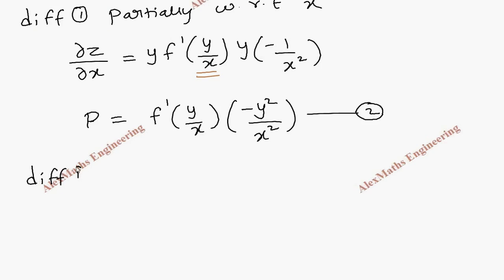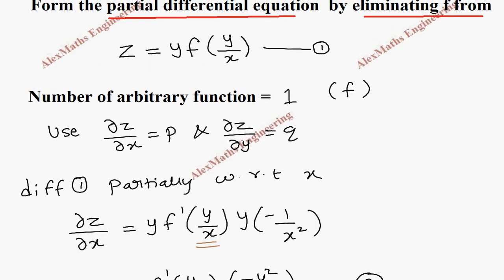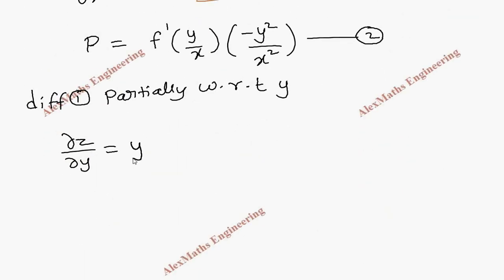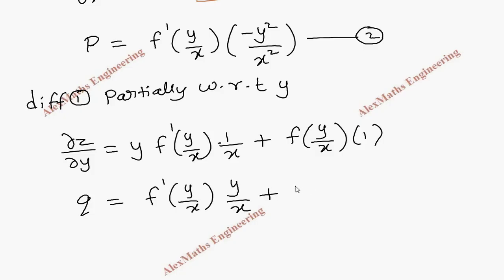Taking the first expression again, we do the partial derivative with respect to y, so z becomes dou z by dou y. We have two terms so we use the product rule: y is one term and f is another. First term y is kept as it is, f derivative is f dash and the inner term is written as it is. Since we are differentiating with respect to y, x is constant so 1 by x is written as it is and the derivative of y is 1. The second term f of (y/x) is written as it is and the derivative of the first term y is 1. Rearranging, this gives q equal to f dash of (y/x) into (y/x) plus f of (y/x).